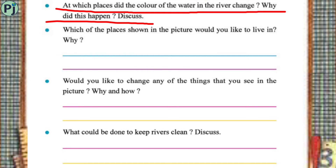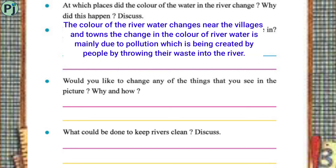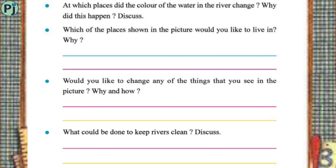At which places did the color of the water in the river change? Why did this happen? Discuss. The color of the river water changed near the villages and towns. The change is mainly due to pollution, which is being created by people throwing their waste into the river.